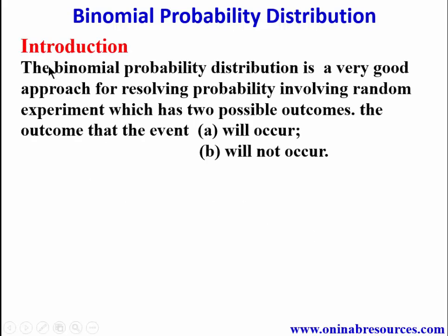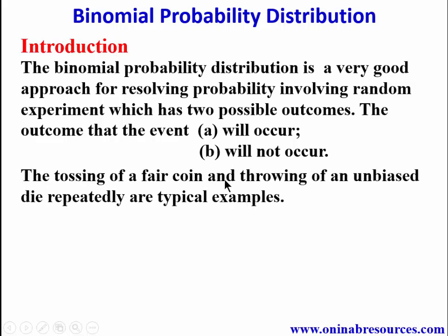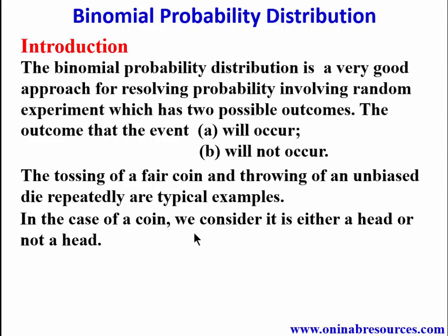The binomial probability distribution is a very good approach for resolving probability involving a random experiment which has two possible outcomes: the outcome that the event will occur, and the outcome that the event will not occur. The tossing of a fair coin and throwing of an unbiased die repeatedly are typical examples. In the case of a coin, we consider it either a head or not a head — it could be either a tail or not a tail — and invariably there are two options. For a die, we may consider the event of having a six or not a six, and any other choice of numbers.